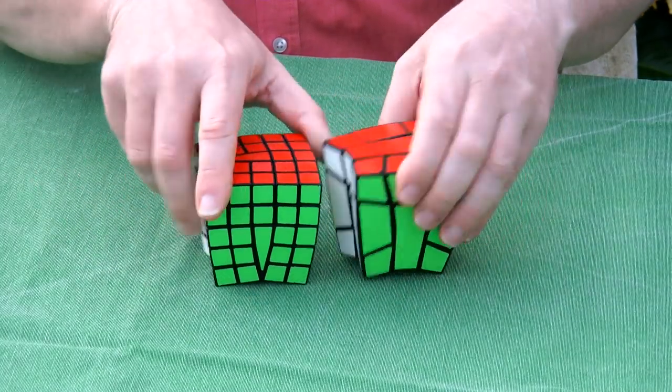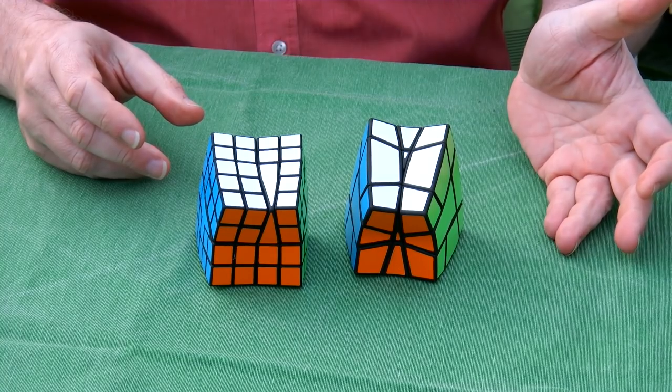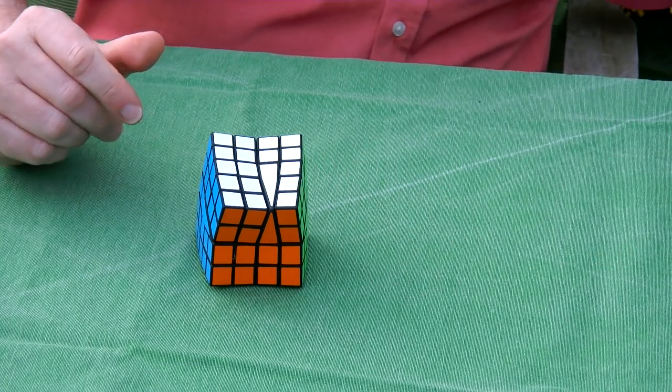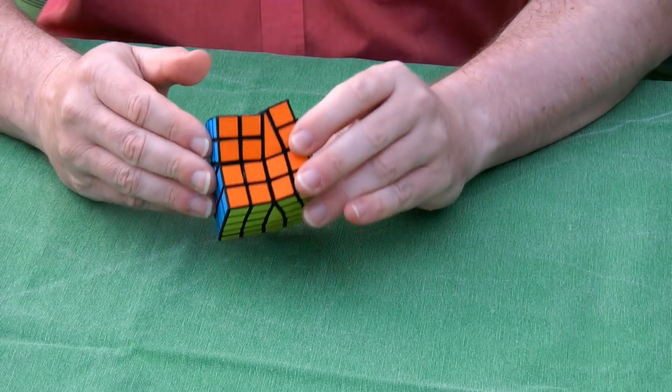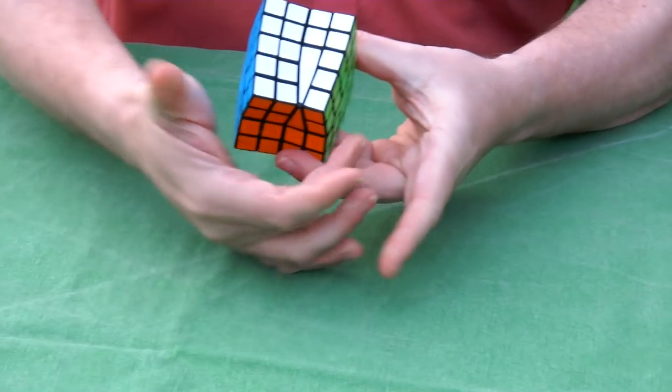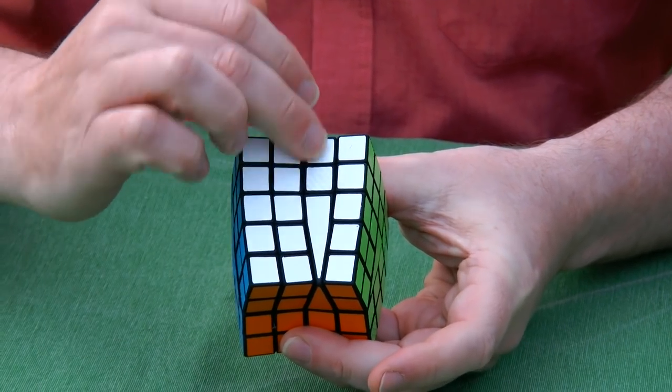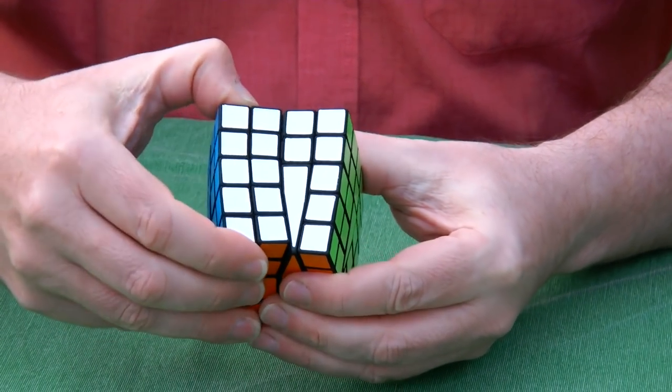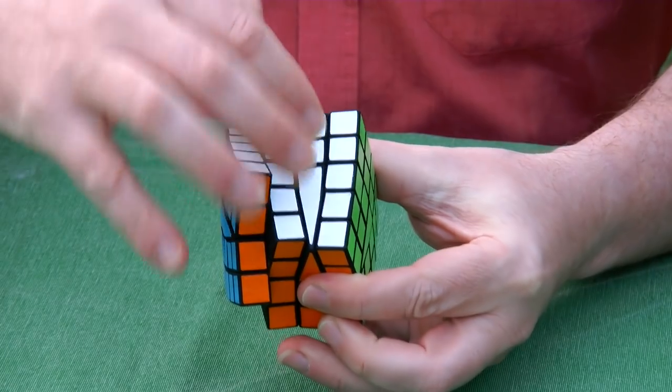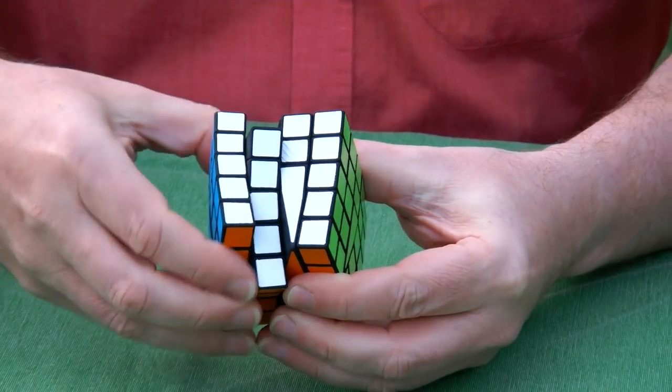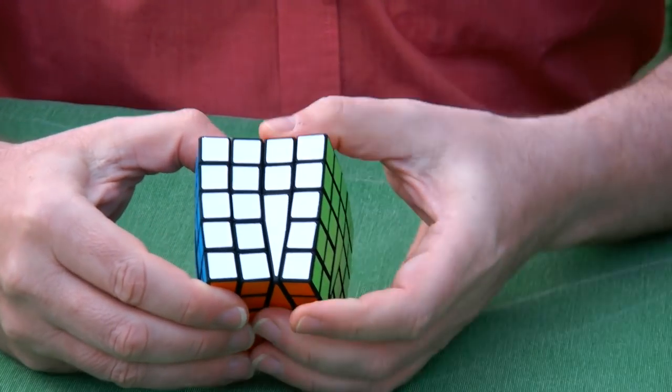But you see it has similar properties with one exception. And this is something that Melinda Green will really like. That is when squeezing these parts together, there was not enough space to make both layers move. So here, this layer can rotate but this layer, there was not room enough.